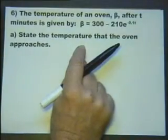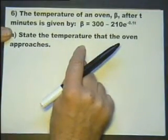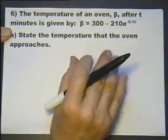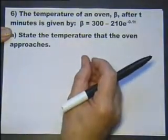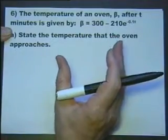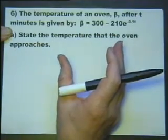State the temperature that the oven approaches. In fact, what that's implying is you turn the oven on, it gets hotter and hotter and hotter, but eventually it arrives at a temperature and it stays at that temperature.